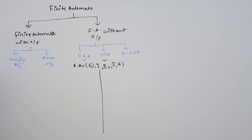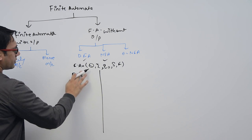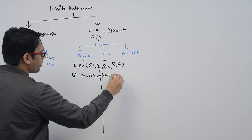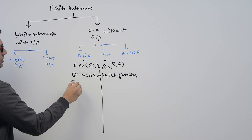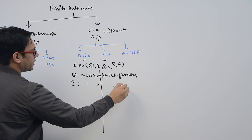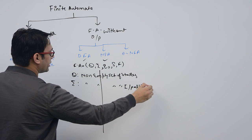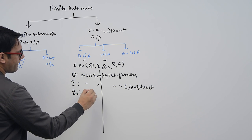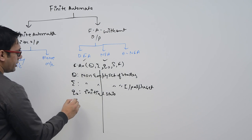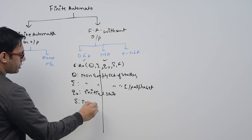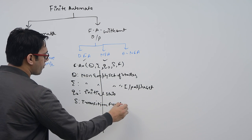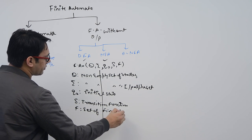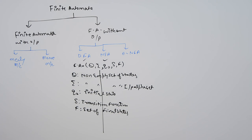In both cases, Q is the non-empty set of states, Σ is the non-empty set of input alphabets, Q0 is the initial state, δ is the transition function, and F is the set of final states. The set of final states means you can have more than one final state and it can also be an empty set.